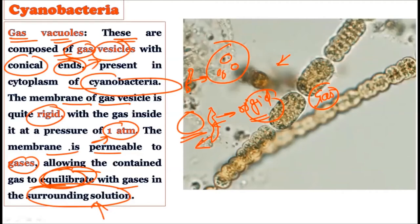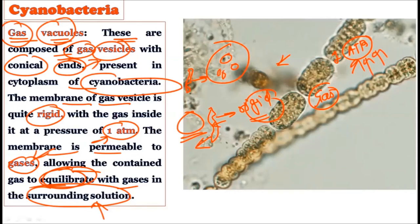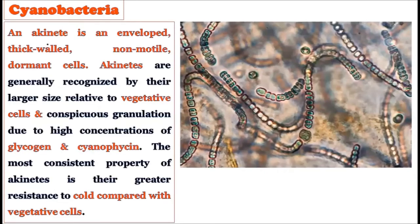The function of gas vacuoles is to permit entry of gases through the gas vesicles, creating equilibrium with the surrounding solution to maintain buoyancy. Gas vacuoles are made up of gas vesicles with conical ends; they possess a very rigid cell wall, and the gas inside shows 1 atm atmospheric pressure. They are permeable to gases and can equilibrate with the surrounding solution.